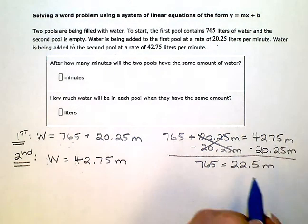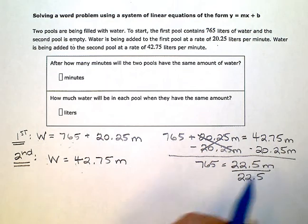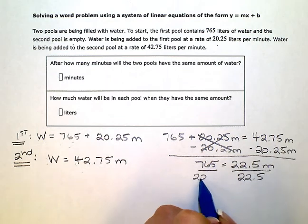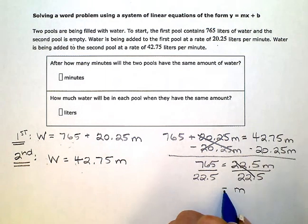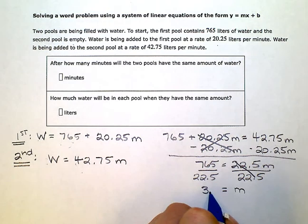Now to get the m by itself, I need to divide by 22.5 both sides. So m is equal to 765 divided by 22.5, which gives me 34.